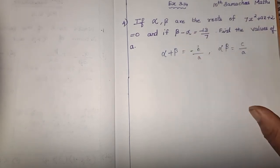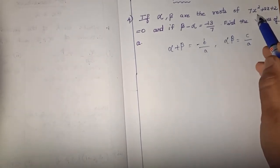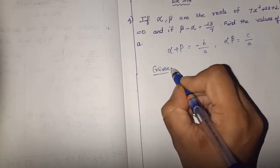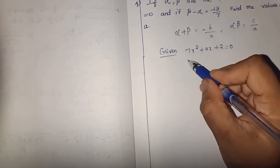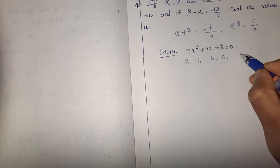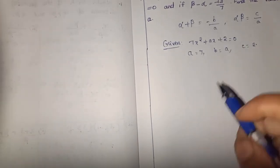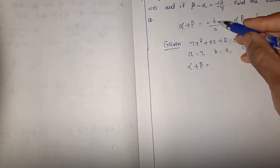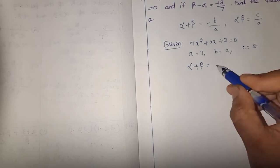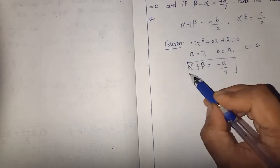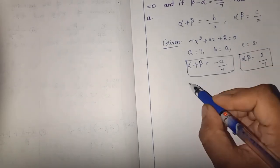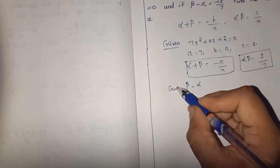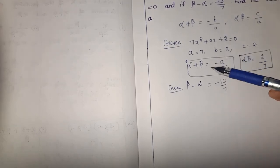One more hint is given: beta minus alpha is equal to minus 13 by 7. For the given equation 7x squared plus ax plus 2 equals 0, A equals 7, B equals A (the unknown), and C equals 2. So alpha plus beta equals minus A by 7, and alpha times beta equals 2 by 7. Now, multiplying beta minus alpha by minus 1 throughout gives us alpha minus beta equals 13 by 7.